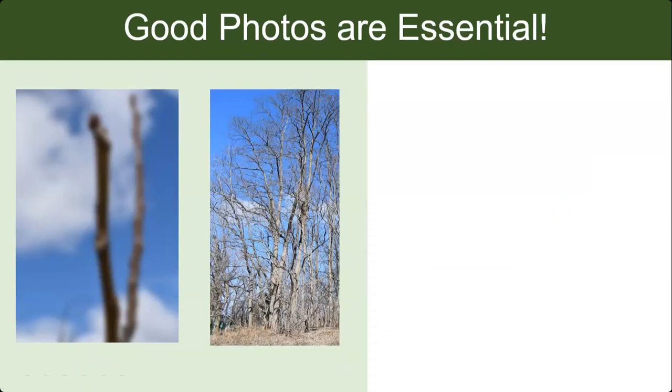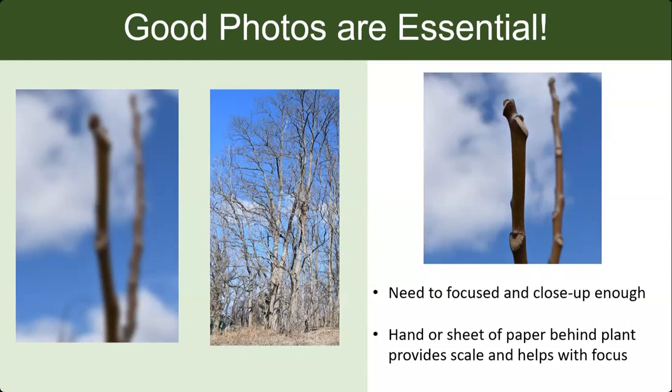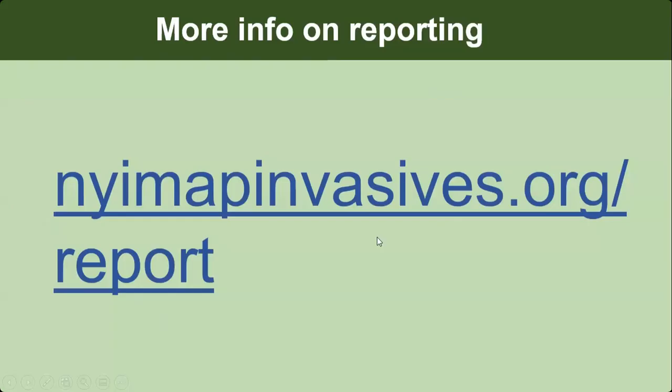Photos are really important — focused close-up photos are much more useful for confirmation. A blurry or distant photo might make identification difficult, while a close-up clearly shows what species it is. We understand you can't control lighting or wind, so just do the best you can. You can put your hand behind a branch to help it focus, or use a piece of paper.